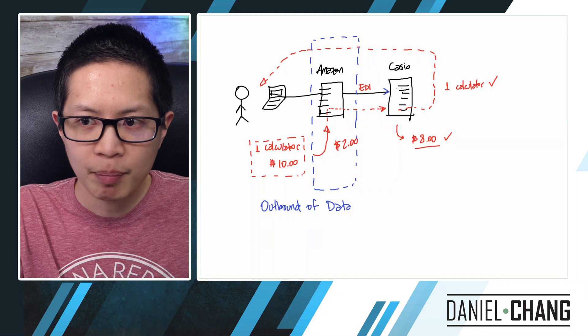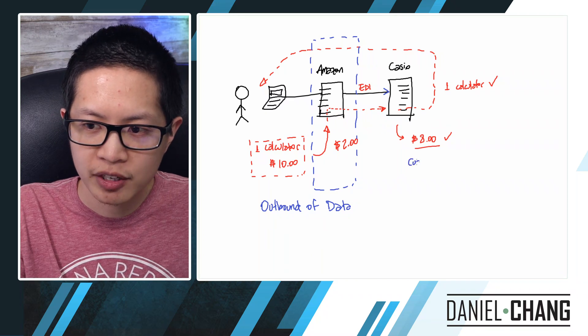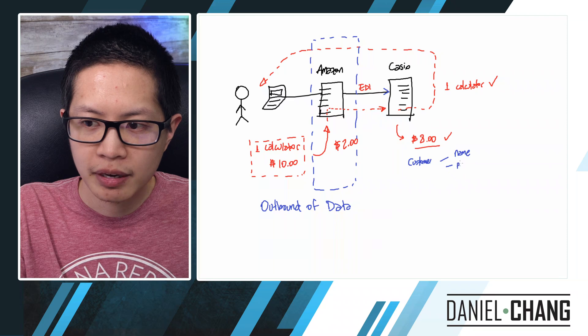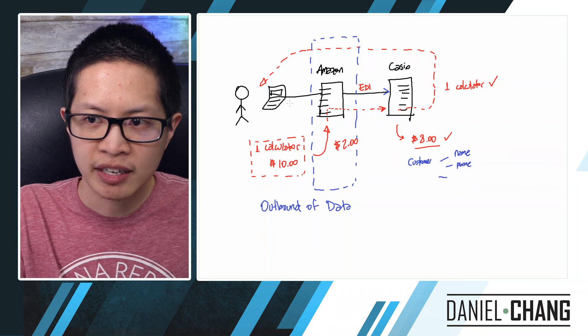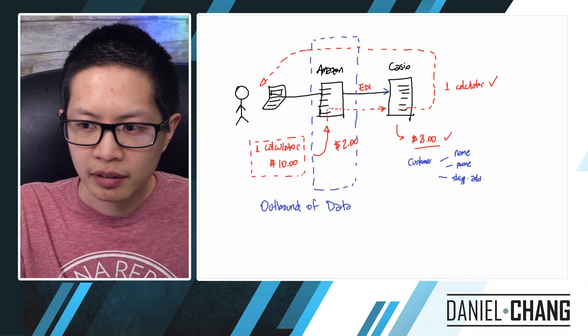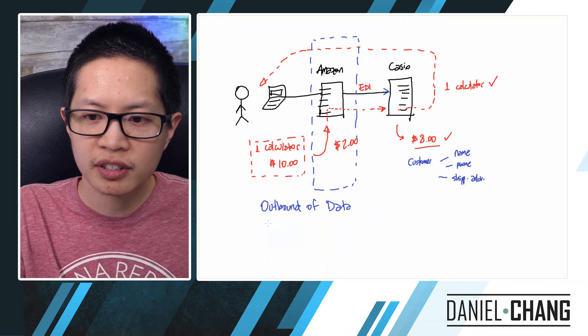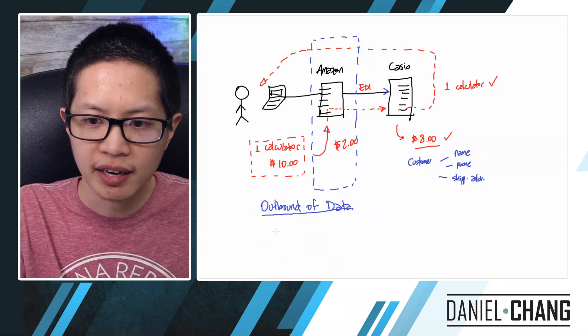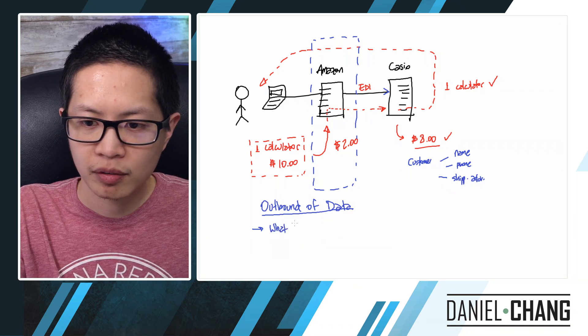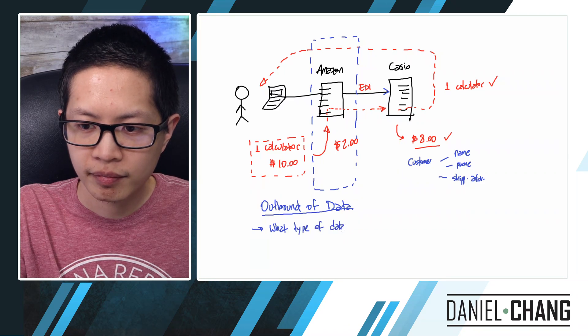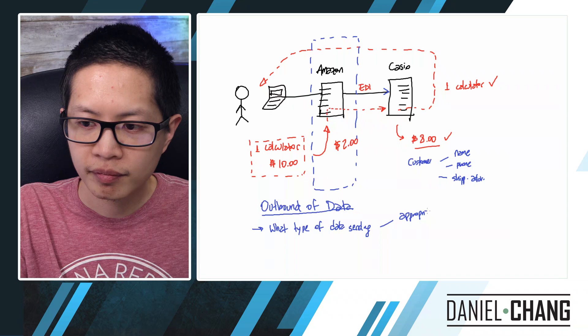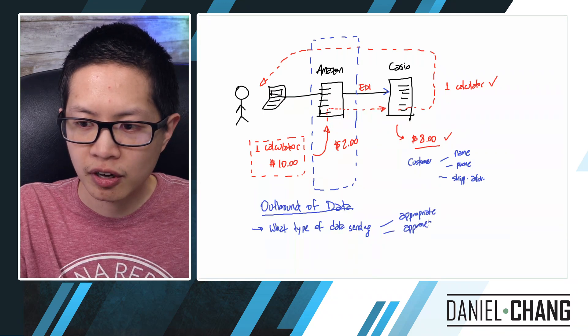What we need to make sure over here is what we will call the outbound of data. The outbound of data because Amazon is sending data to Casio. So it's getting out from Amazon. So we have the outbound of data. So what are some of the risks of sending data to Casio? Well, the risk is not about sending that it was one calculator or saying that they charged $10 or saying that it cost $8. That's not the risk because that's something that Casio needs to know. Now, some of the risks that could happen, well, Casio also needs to know the customer information. But what type of customer information Casio needs to know? Maybe the name? Maybe their phone number, potentially? As they're shipping, if there's any issues with shipping, and definitely their shipping address, they don't need to know anything else.